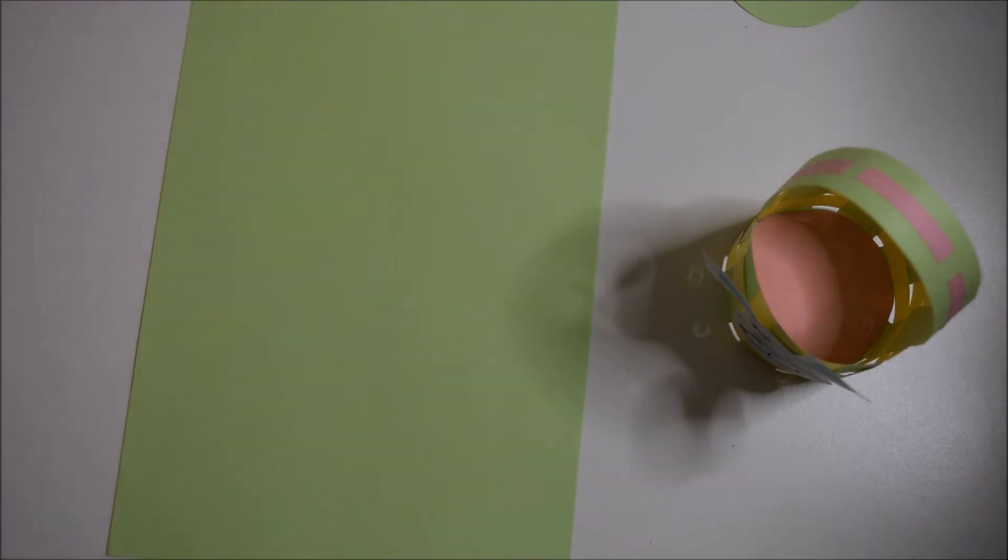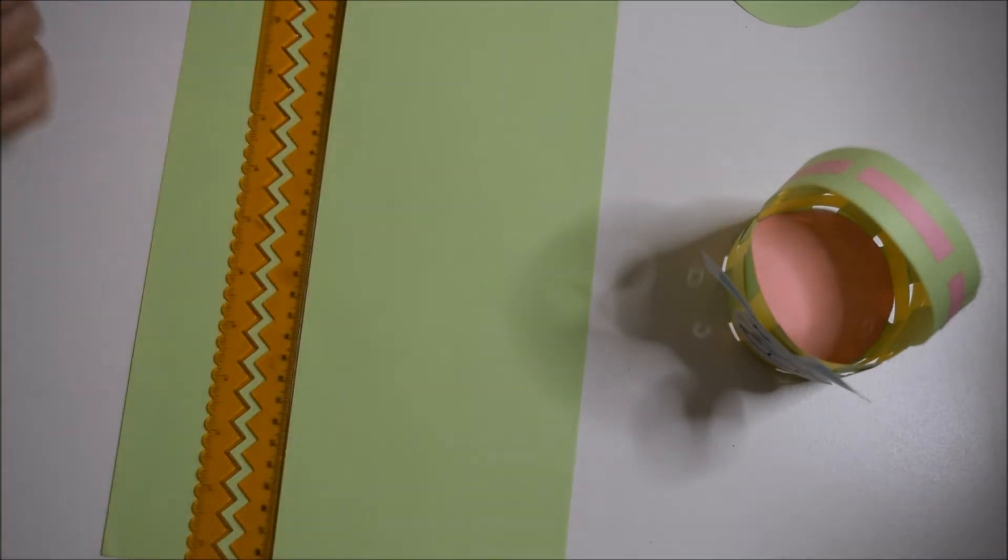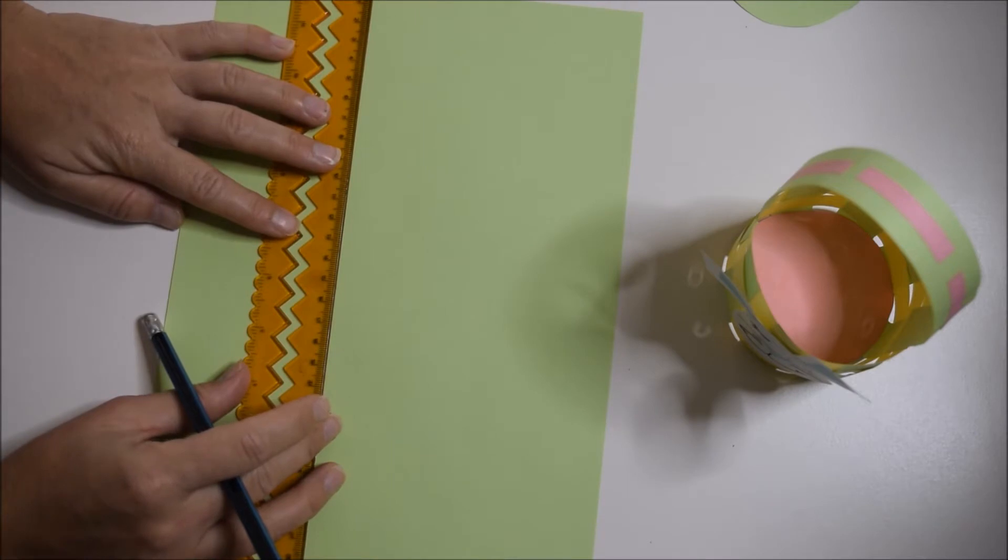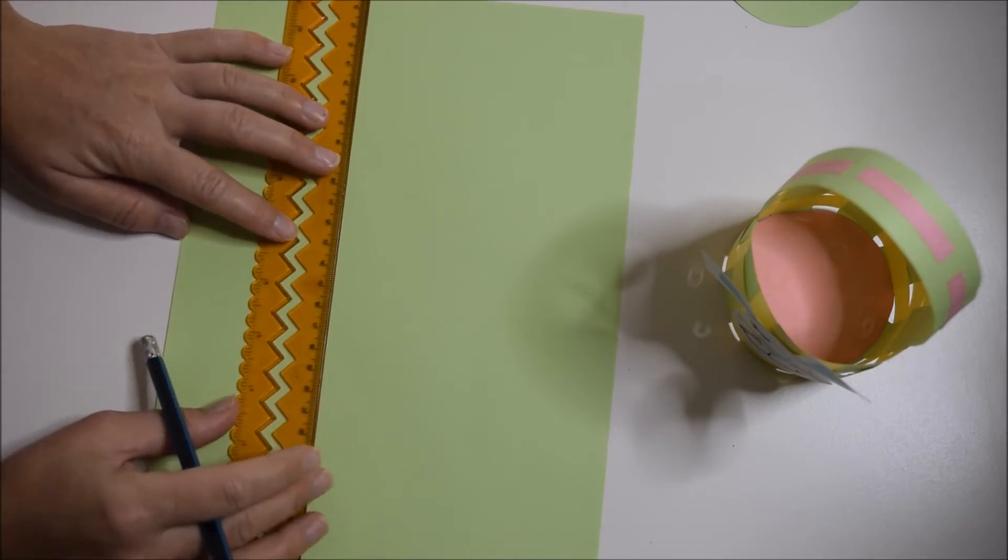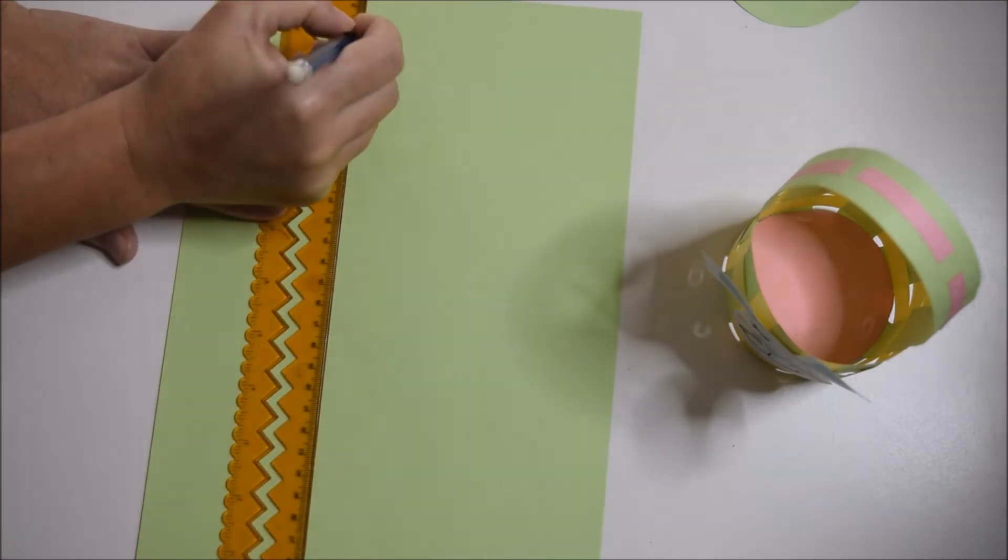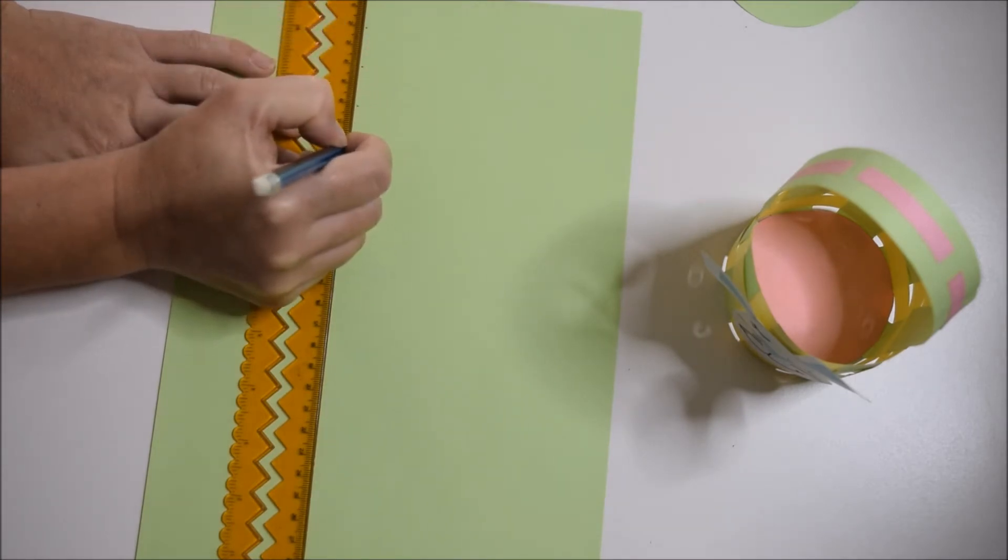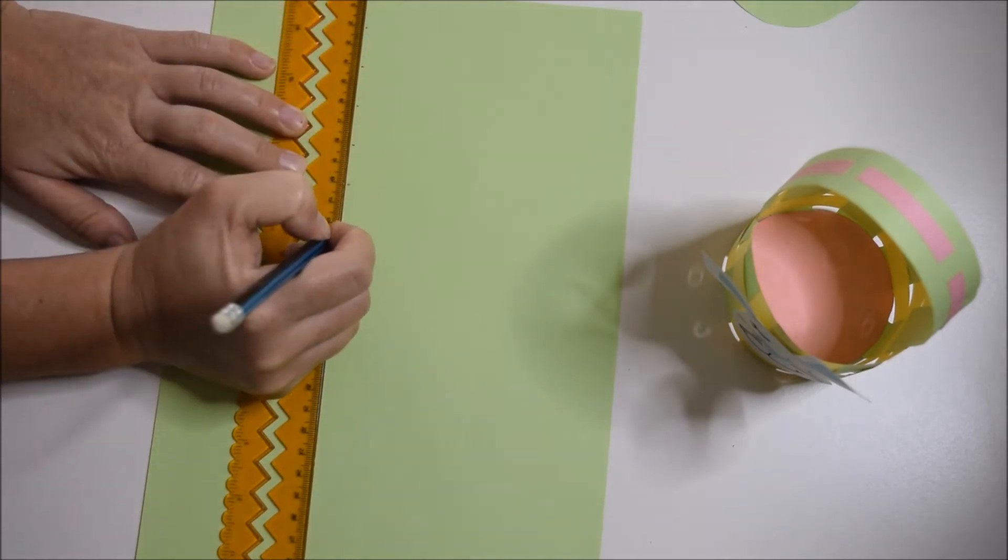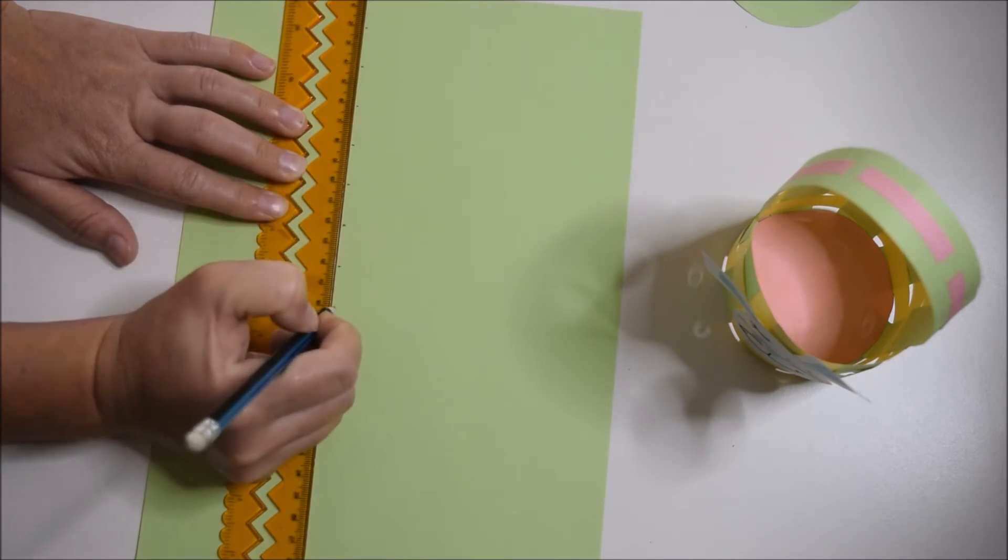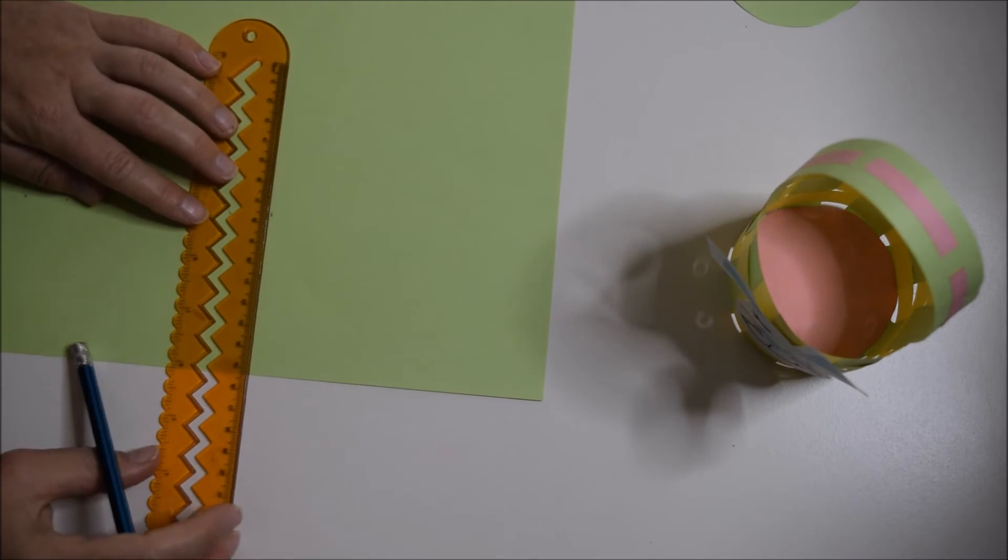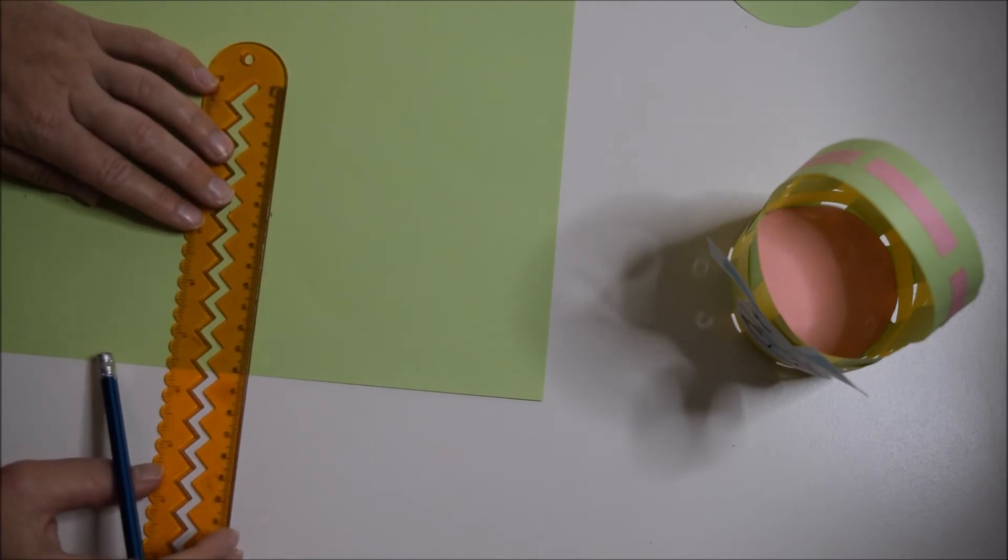So pop those to the side and we'll grab our green bit of paper and we're going to draw some lines to make our strips. So these ones are going to be two centimeters wide and you'll need eight of them, and I go up about 14 centimeters.